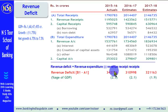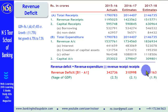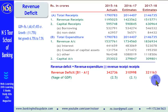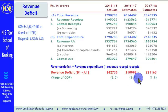Similarly, calculation has been made for these two years. To calculate revenue deficit as a percentage, we divide 321,163 by GDP, which gives us the revenue deficit as a percentage of GDP. It is 1.9%. It was 2.5% in the previous year, it is estimated at 2.1% in the current year, and projected at 1.9% for next year.